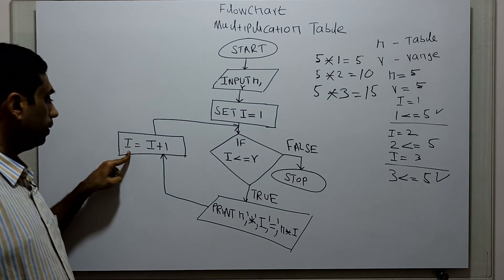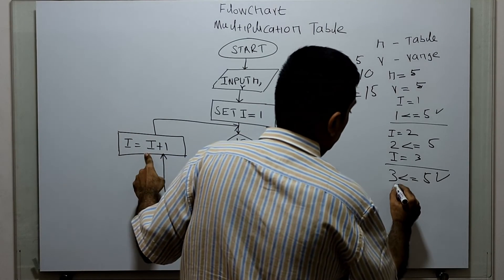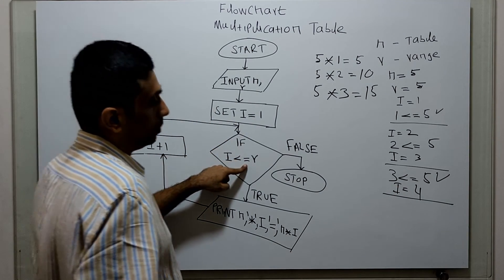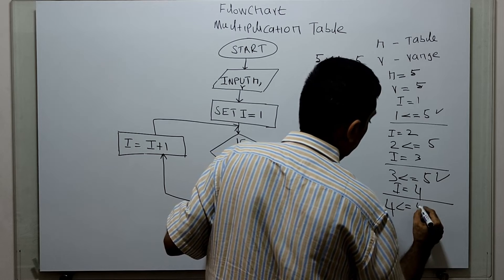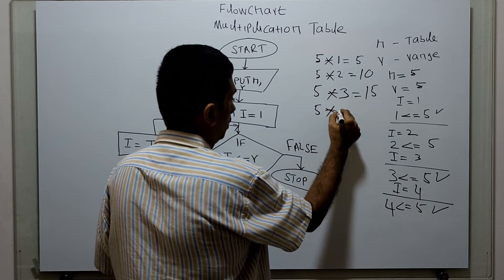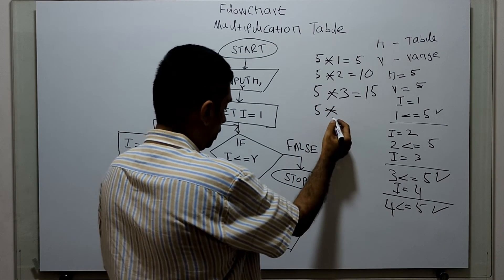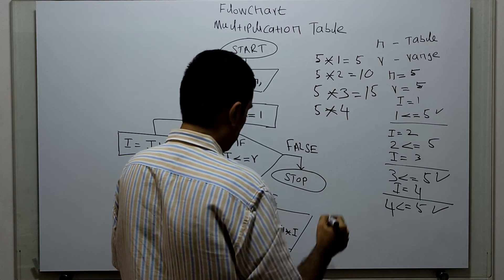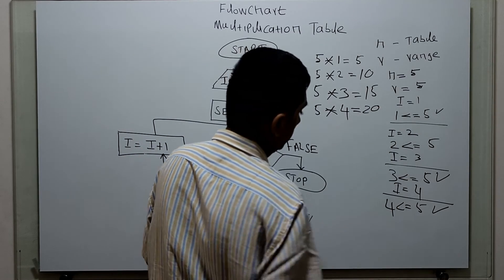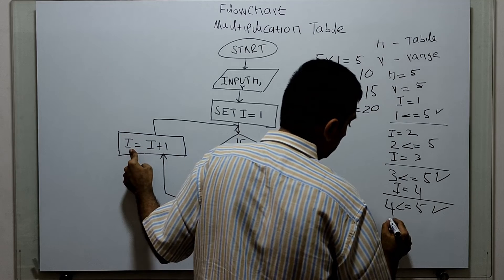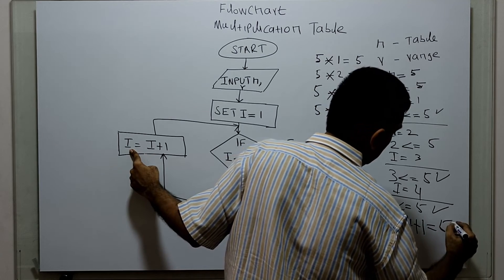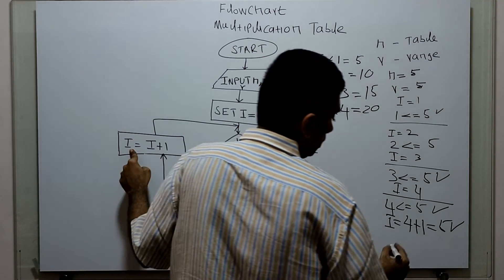The value of i will get incremented by 1, now i equal to 4. If i less than or equal to r: 4 less than or equal to 5 — true. Print: n is 5, star is the string symbol, i value is 4, equal to is a string, and n times i that means 5 times 4 equal to 20. Now incrementing i by 1: i equal to 4 plus 1 which is 5.